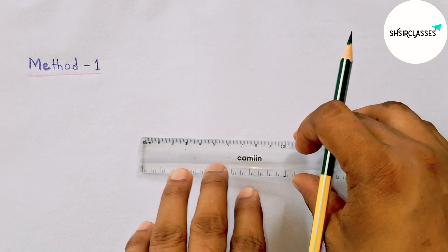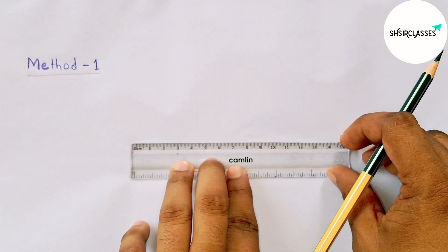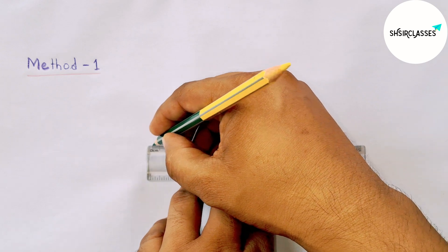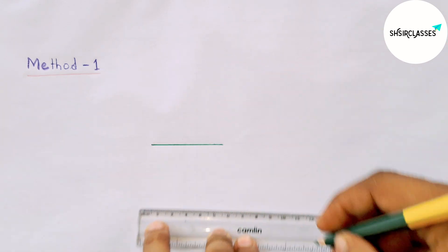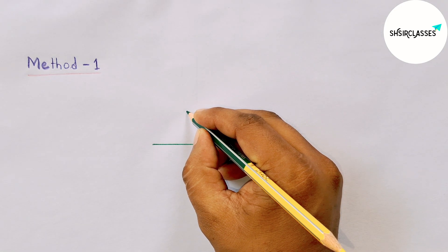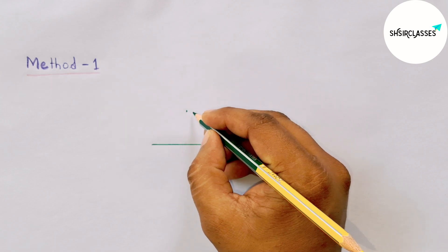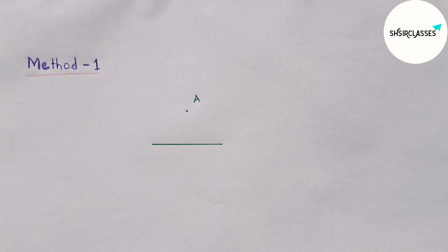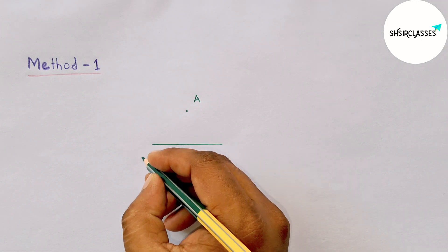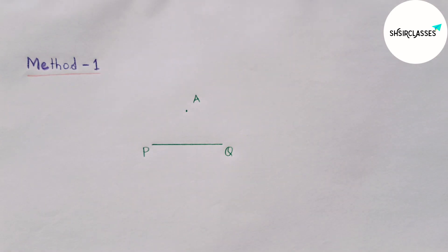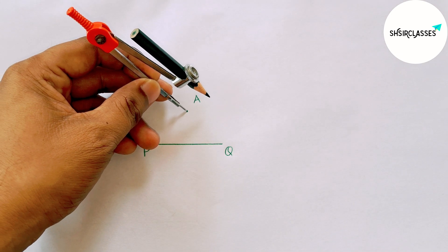First, using method number one to draw a parallel line. First drawing a line segment of length 5 centimeters, then taking an external point to this line segment. Labeling this line segment P and Q, so PQ equals 5 centimeters.